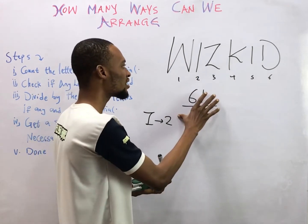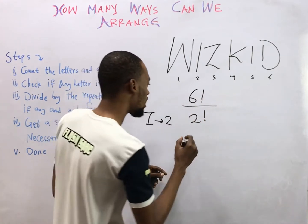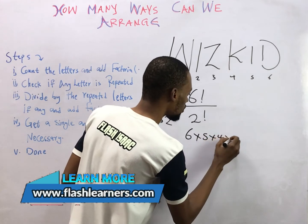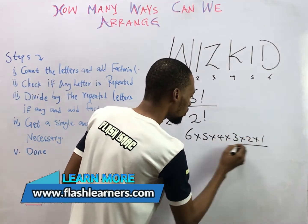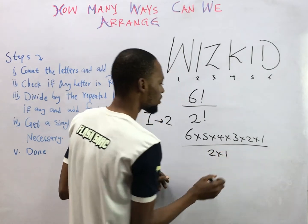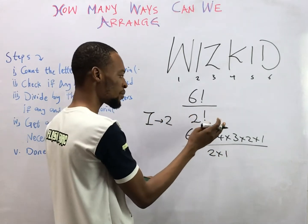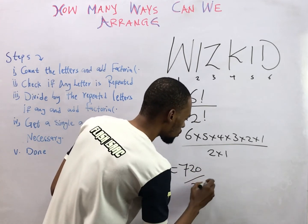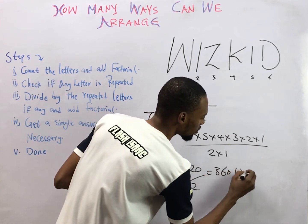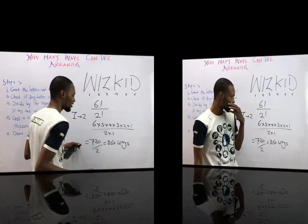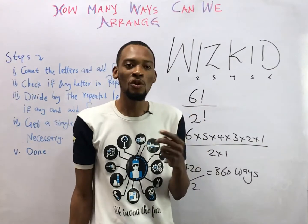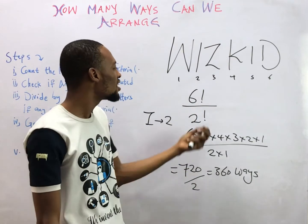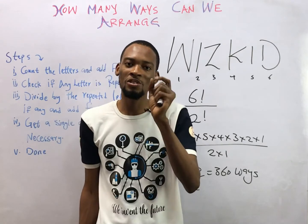This is the number of ways we can arrange the letters of the word WHISKEY. We can break it down to six times five times four times three times two times one, over two times one, because two factorial is two times one. This gives you 720 over 2, which equals 360 ways. So the letters of the word WHISKEY can be arranged in 360 ways, or six factorial over two factorial.